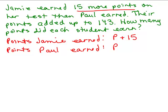Somebody may have done this differently and let Jamie be x, and then you'd have to subtract 15 to figure out what Paul earned. So this isn't the only way you could set it up.